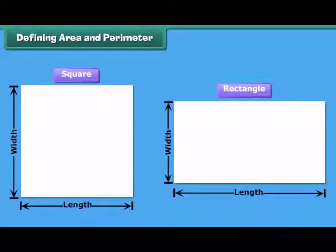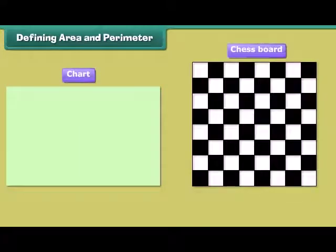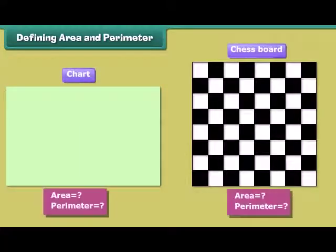Friends, we already know about closed figures like squares and rectangles. For example, this chart paper is a rectangular chart, while the chessboard is a square. How can the area and perimeter of such mathematical figures be calculated?